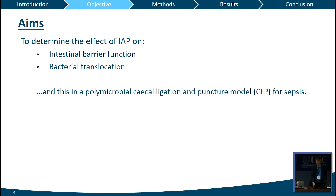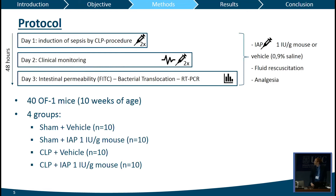We had a two-day protocol starting at day one with the induction of sepsis by means of a CLP procedure. Then we followed our mice clinically on day two, and on the third day we sacrificed our animals and performed our tests. We used 40 OF1 mice divided into four groups: two sham groups and two CLP groups, treated with either vehicle or intestinal alkaline phosphatase at one international unit per gram of mouse per day.